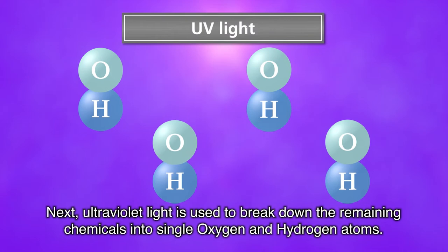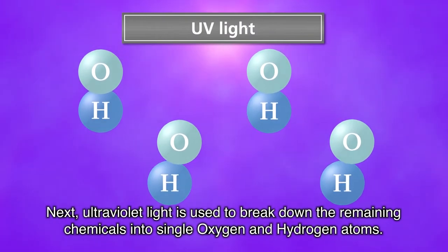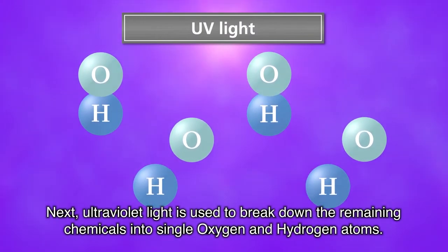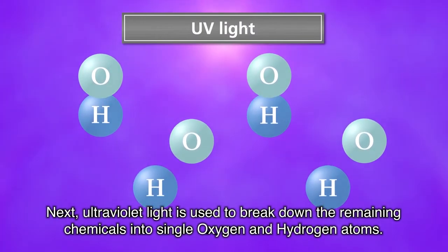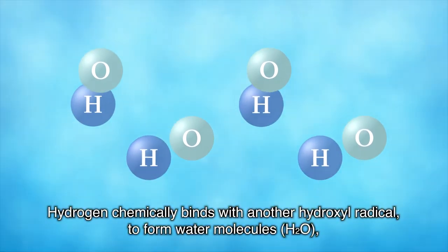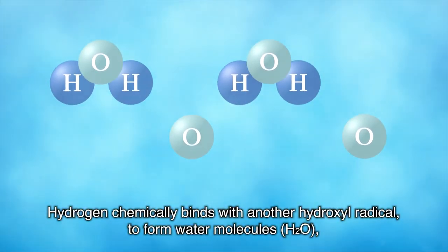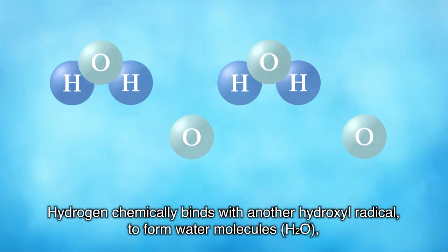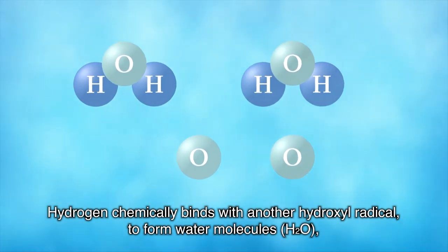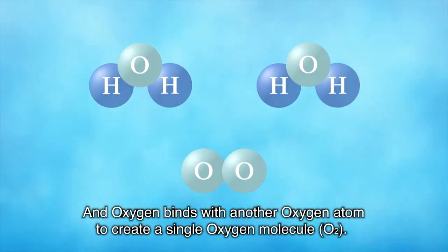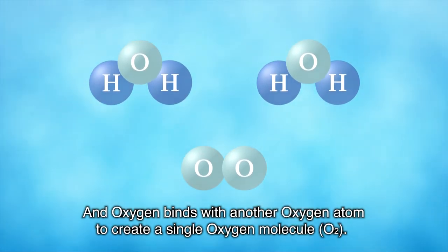Next, ultraviolet light is used to break down the remaining chemicals into single oxygen and hydrogen atoms. Hydrogen chemically binds with another hydroxyl radical to form water molecules, H2O, and oxygen binds with another oxygen atom to create a single oxygen molecule, O2.